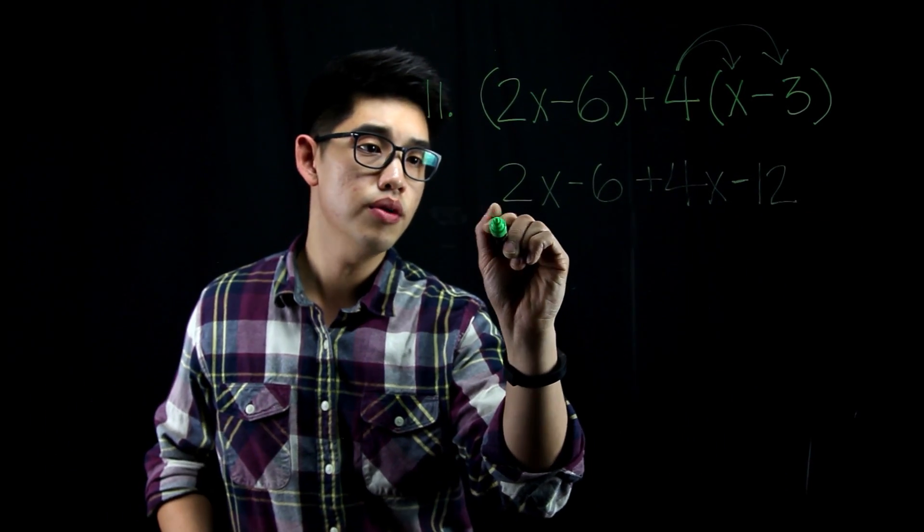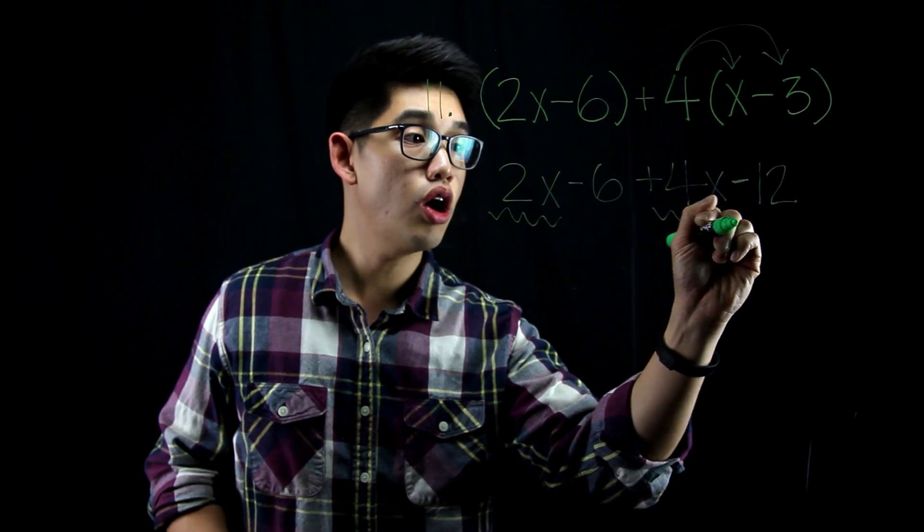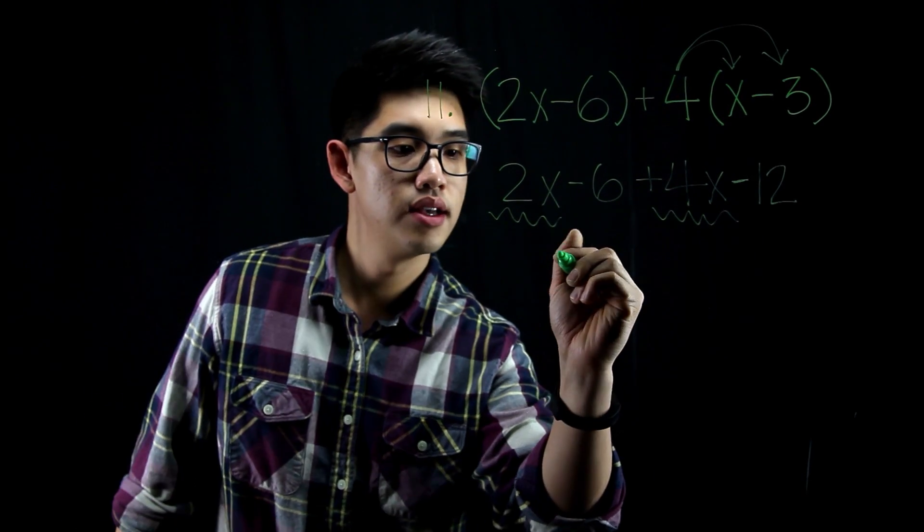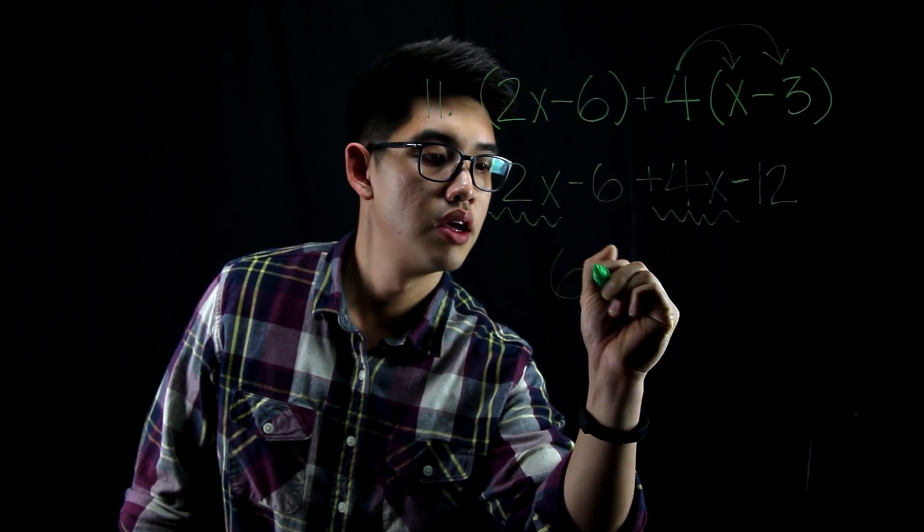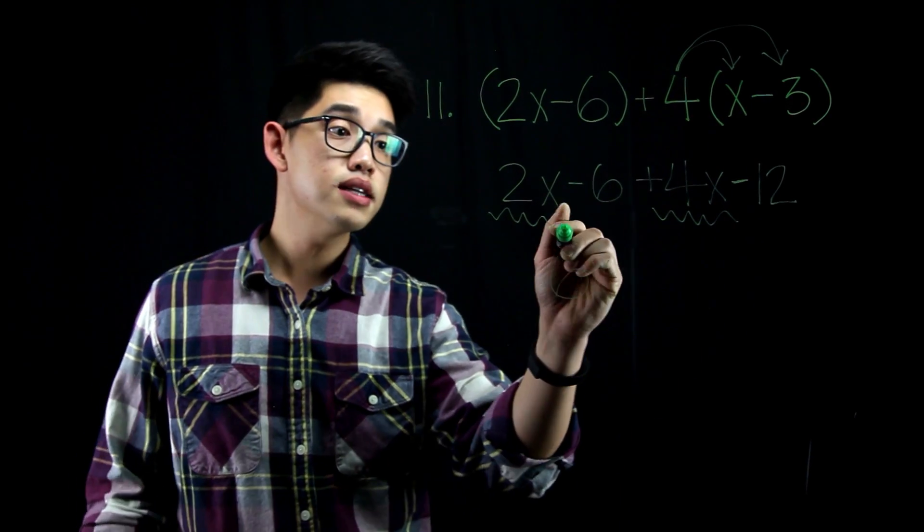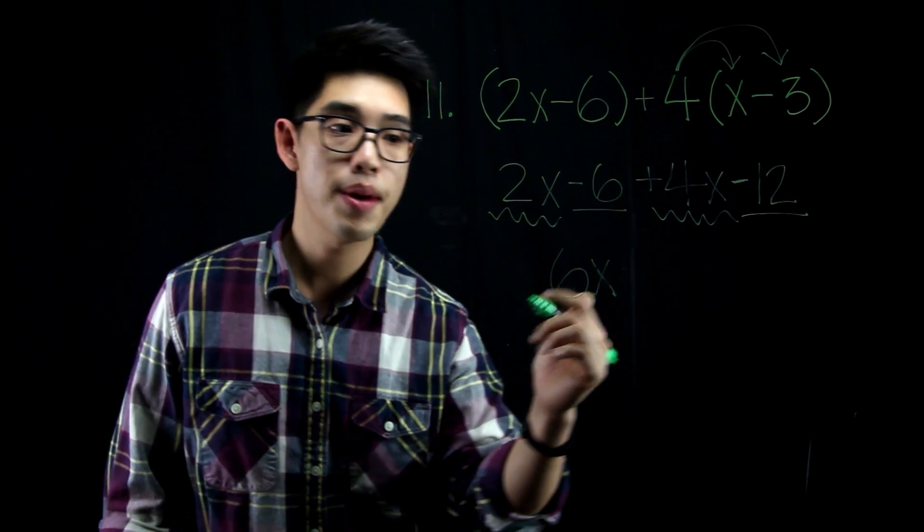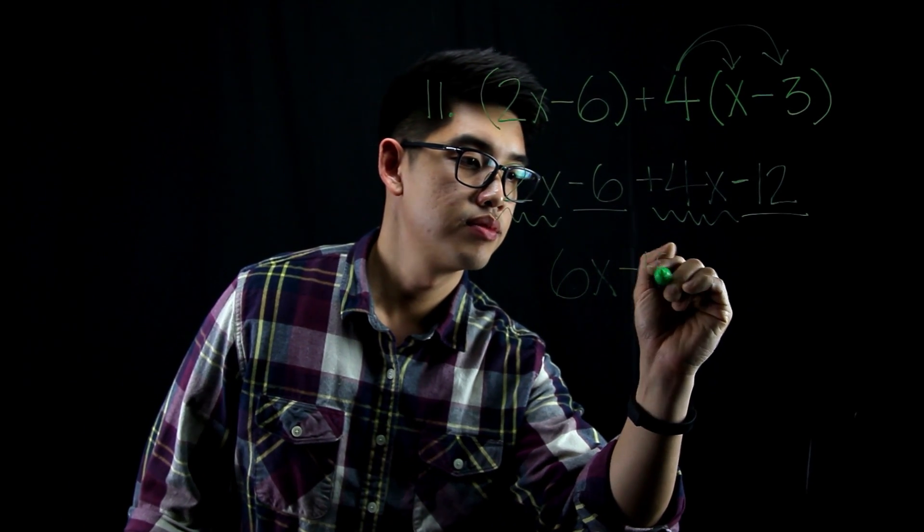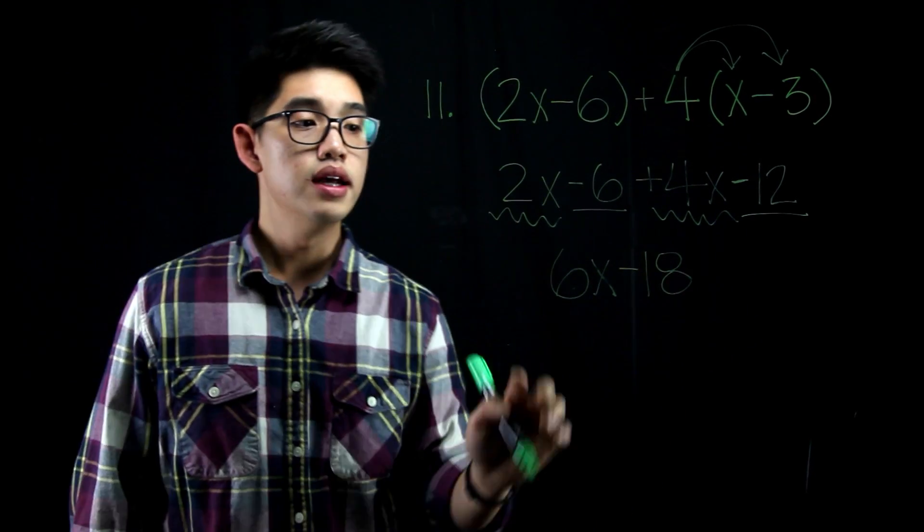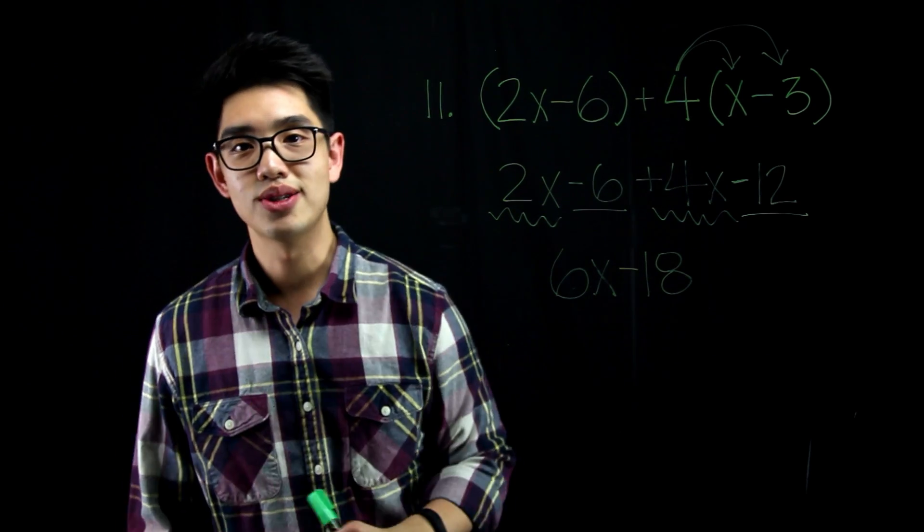I can combine like terms. I have 2x's here. I have 4x's here. All together, I have 6x's. And then I have negative 6 and then I have negative 12. All together, I have negative 18 or minus 18. And 6x minus 18 is your answer.